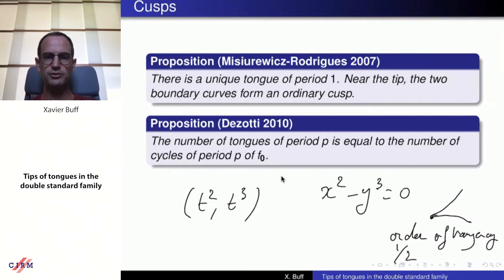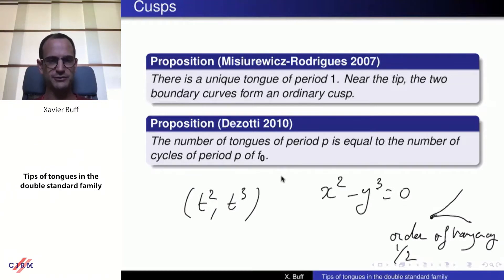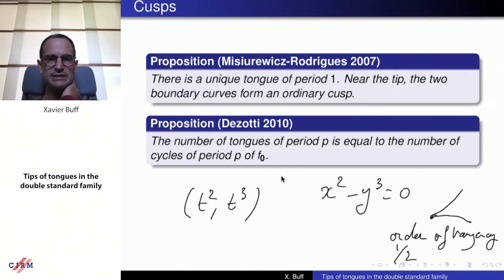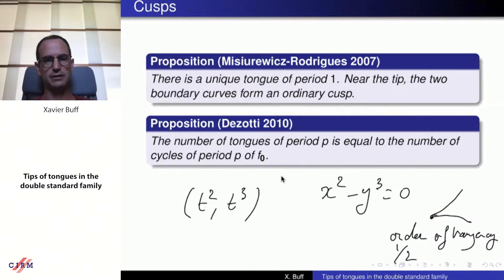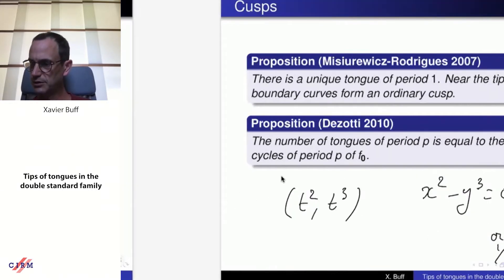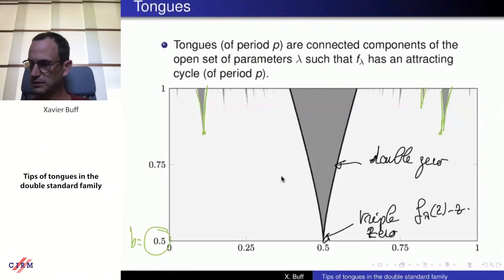This result was generalized to arbitrary period in 2010: the number of tongues of period p equals the number of cycles of period p for the map x → 2x on R mod Z (or z² on the circle). The proof uses quasi-conformal surgery to connect any parameter in a tongue of period p to a particular parameter at b = 1/2, where the pair of complex conjugate critical points merge on R mod Z to a double critical point.